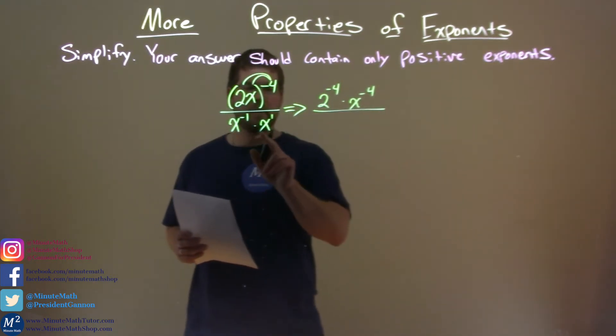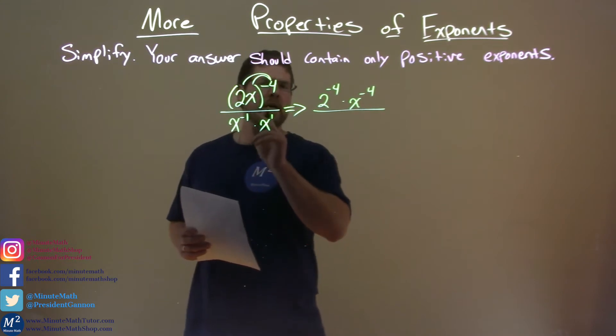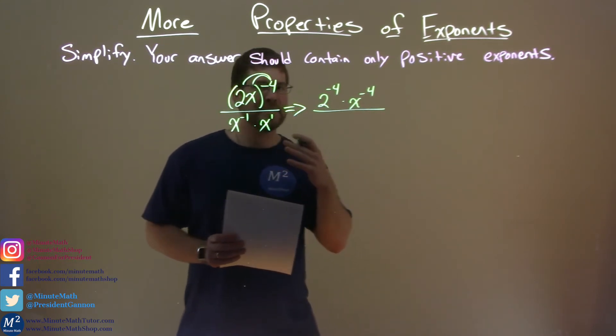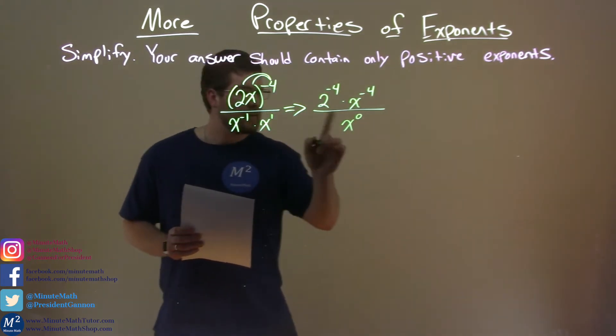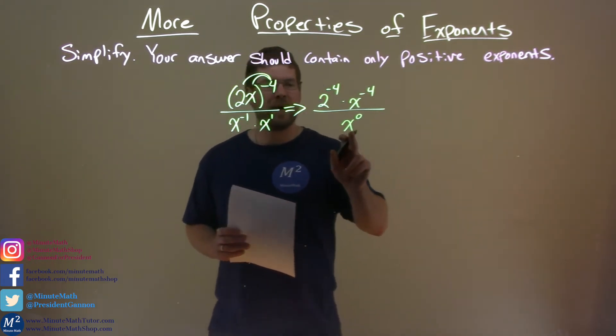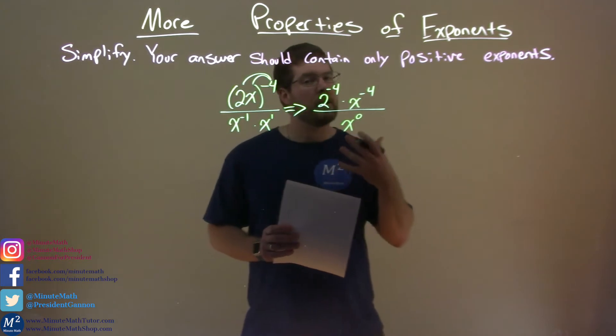Our rules say same base, we add the exponents. Negative one plus a positive one is zero, so we have x to the zero power. Now that's not dividing by zero, it's divided by x to the zero power, which we know is one.